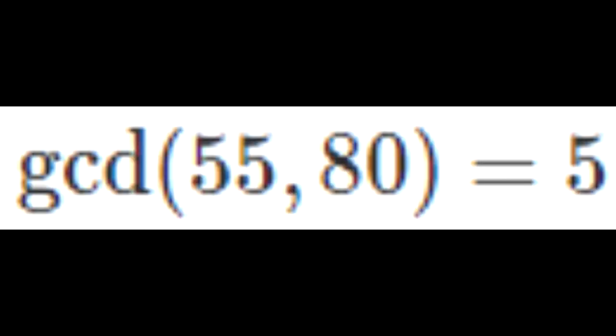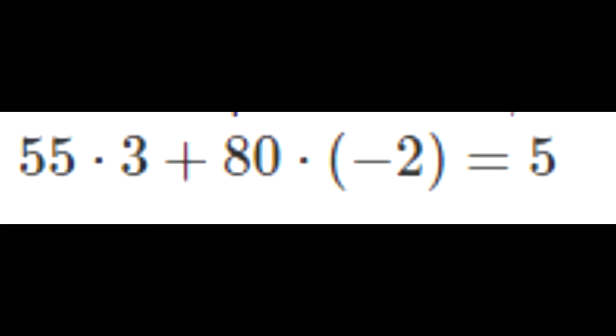So as an example, the GCD of 55 and 80 is equal to 5. In terms of 55 and 80, 5 is actually equal to 55 times 3 plus 80 times negative 2. So basically we're trying to find the 3 and the negative 2 in this case.